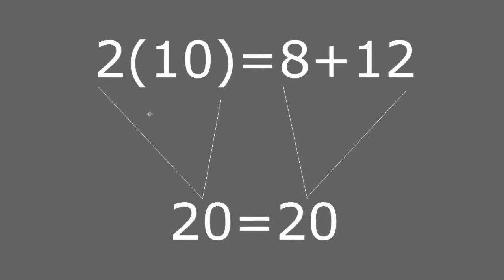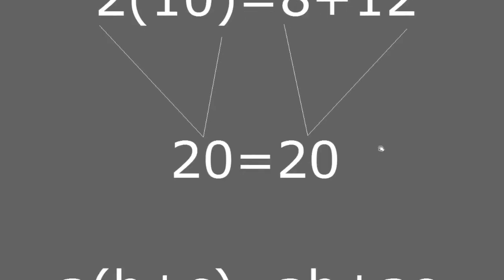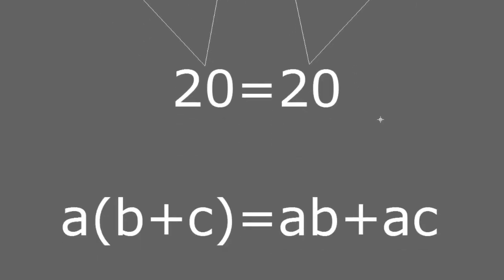2 multiplied by 10 is 20, and 8 plus 12 is also 20. So we have shown here that no matter which method you want to use — you can first add b plus c and then multiply by a, or you can multiply a times b and add a times c — the result is going to be the same on both sides of the equation.